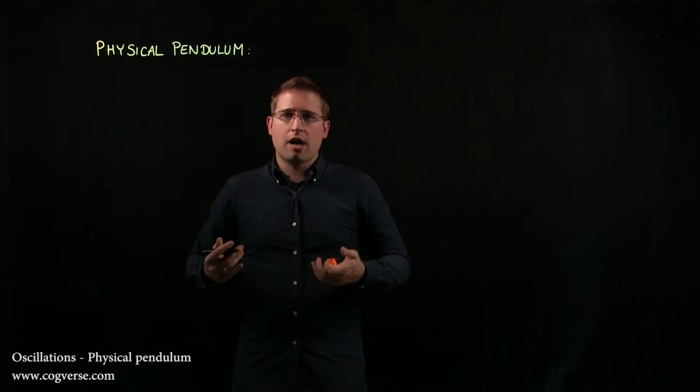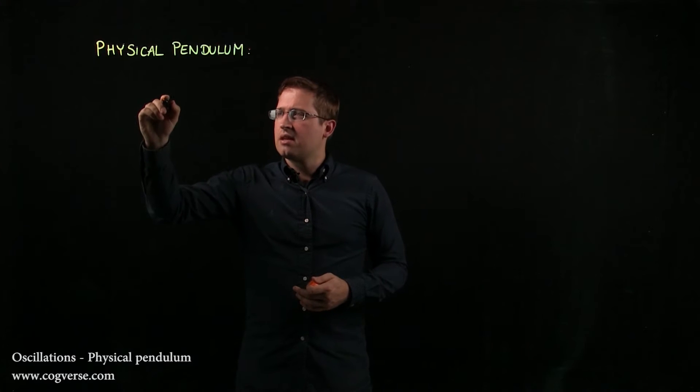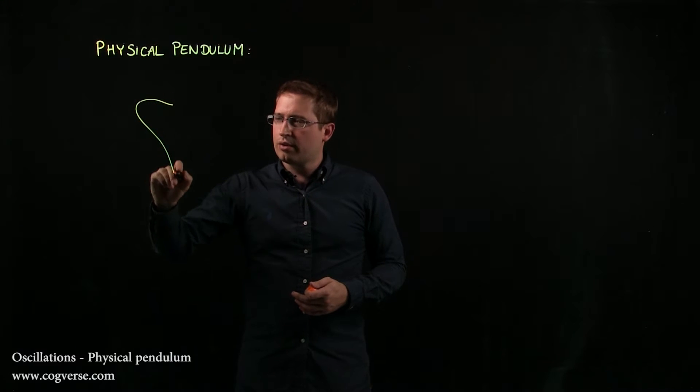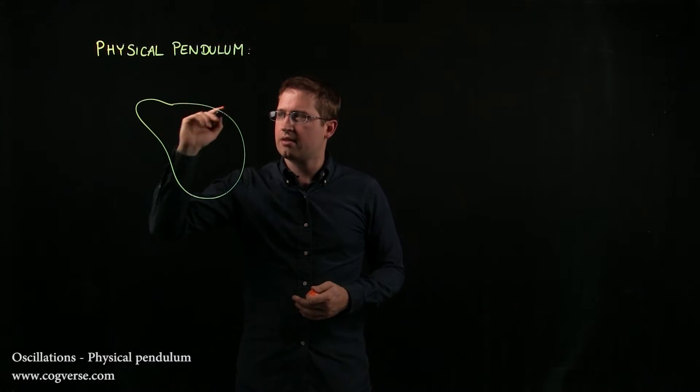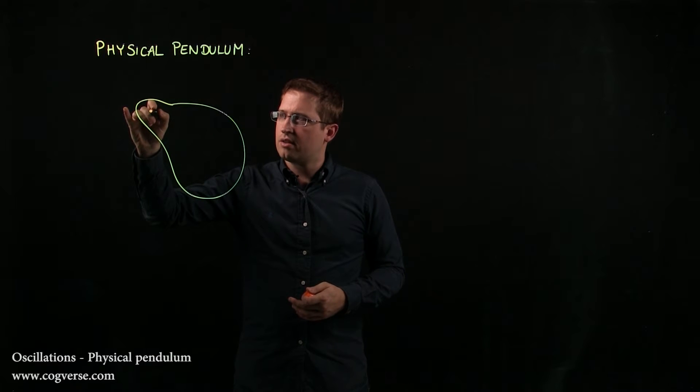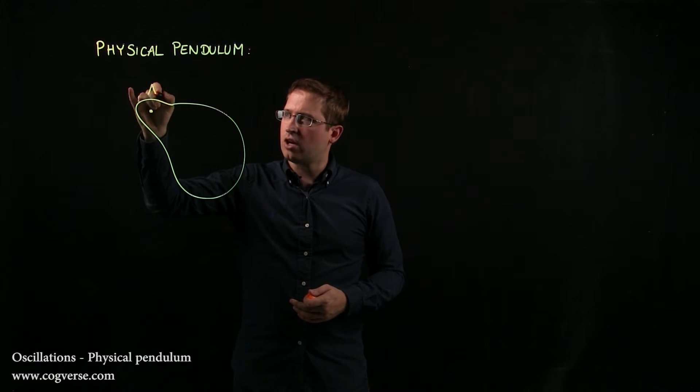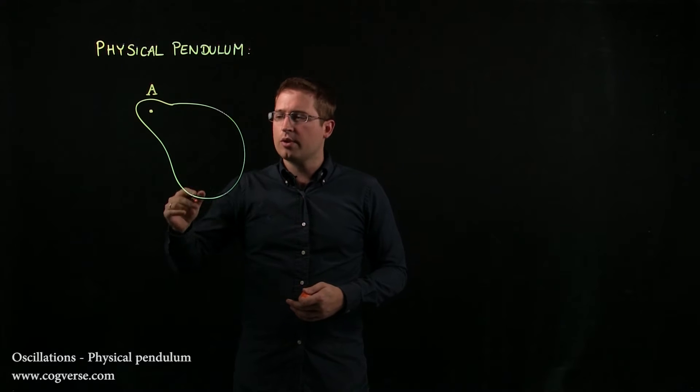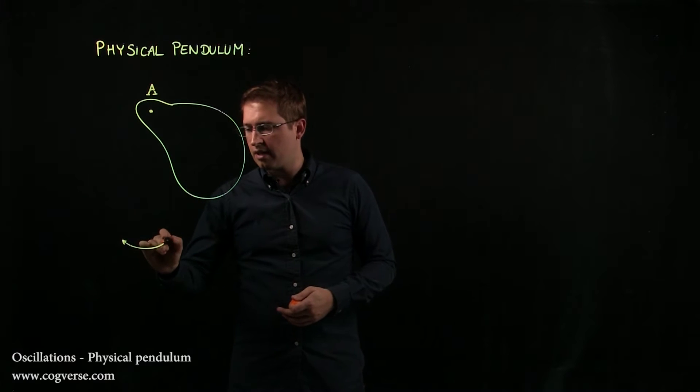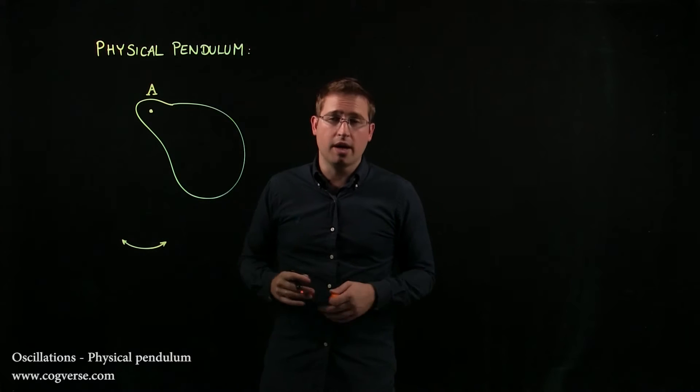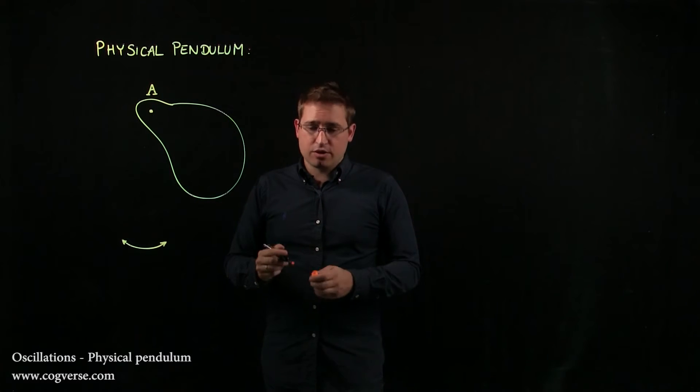Now what is a physical pendulum? Well, a physical pendulum is any object that has a mass or size that you take and you try to have oscillate back and forth. Say you have something a bit weird looking like this. And this is your pivot point, call it A, and you would like to have this oscillate back and forth like that. Why not? Well, that's your physical pendulum.